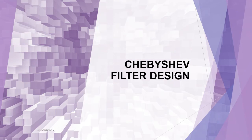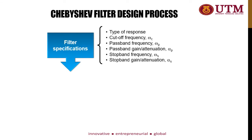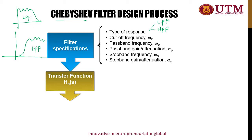Let's look at how to design a Chebyshev filter. These are the processes involved: first, you need to determine the filter specification and type of response — whether it is low pass or high pass. For Chebyshev, the frequency response should have ripples at the passband area for low pass filter, and also ripples in the passband for high pass filter. Next, you need to write down the transfer function — you will have two types: the normalized transfer function H(s) and the actual or final transfer function H(s).